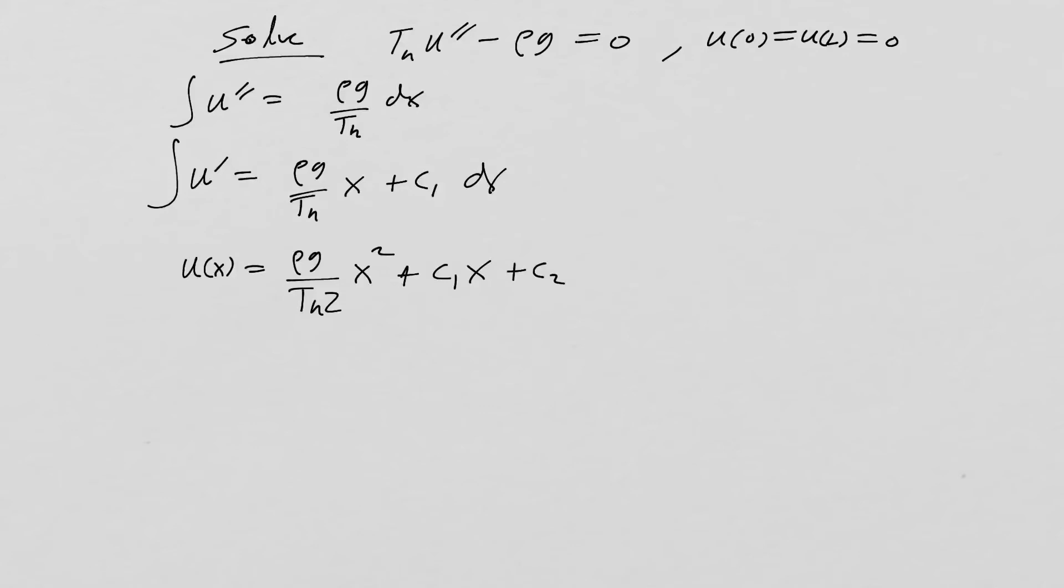with a two in the denominator now, x squared plus C1·x plus C2. And those are our integration constants from performing the two integrals. Now we have to look at the boundary conditions. So u of zero is equal to zero plus zero plus C2 is equal to zero. So now we know that C2 is equal to zero.